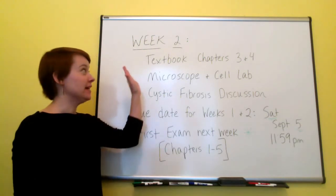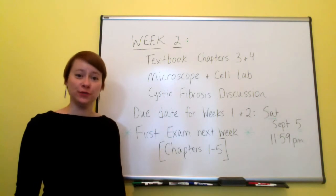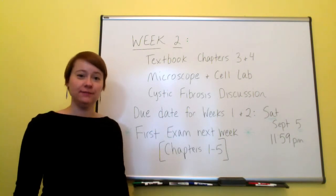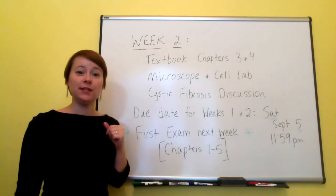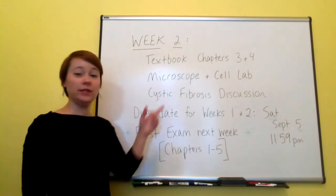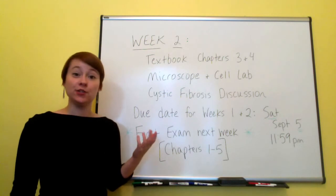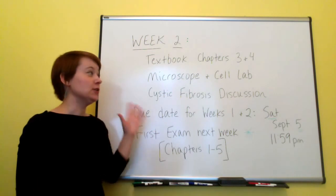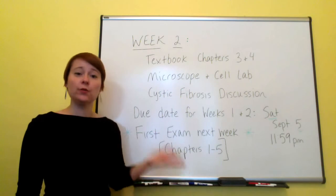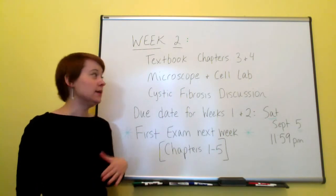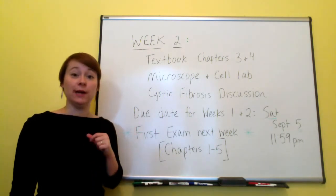Everything assigned for Week 2 can be found in the Session 2 folder under the Course Materials section. You're going to have two textbook reading chapters assigned — Chapters 3 and 4. You're also going to have a lab over the microscope and cell structure, so you'll need to get that lab completed and get the lab report turned in through Blackboard, or you can email it to the student grader. Then you'll need to take the lab quiz once you've finished the lab report.